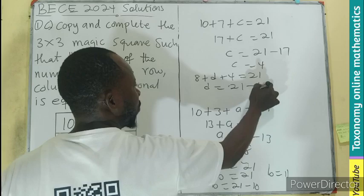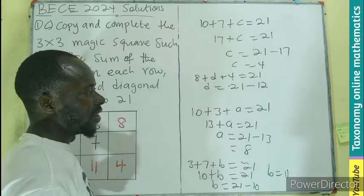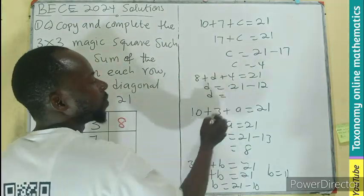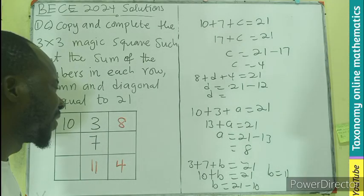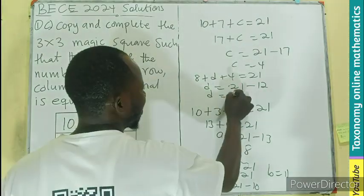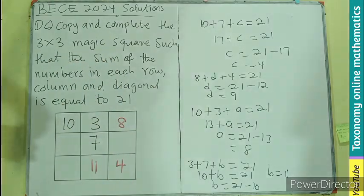So if that is 12, what would be d? 21 minus 12, I believe that would be 9. So I'll be having this area to be 9.